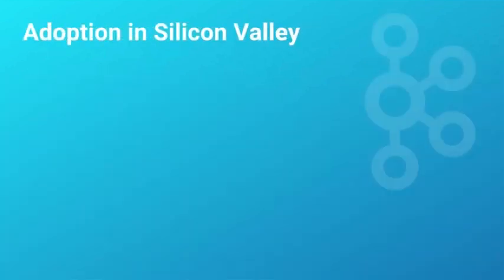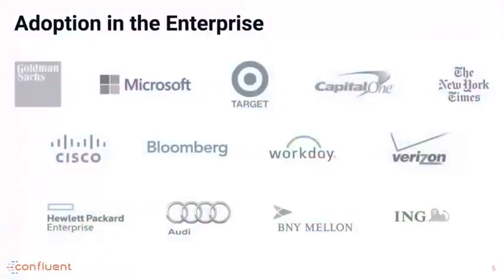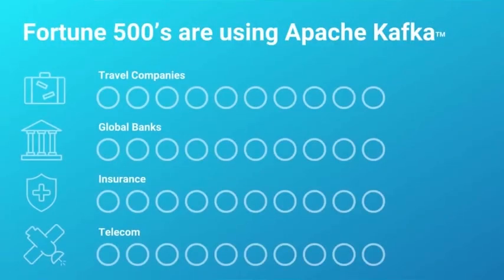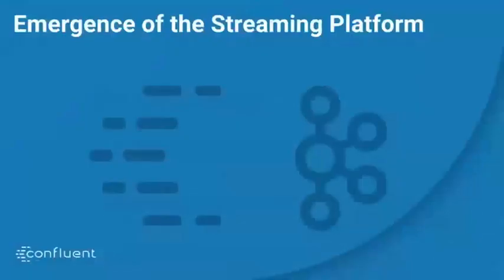Let's look at Kafka's journey thus far. It started with adoption in Silicon Valley, where a lot of digital companies adopted Kafka in the early days — about seven years ago. Over time, in the last couple of years, it has really made its way into enterprise companies, and today Kafka is used for mission-critical applications across thousands of large enterprises. About a third of Fortune 500 uses Kafka, spanning six of the top 10 travel companies, global banks, insurance, telecom, and many more.